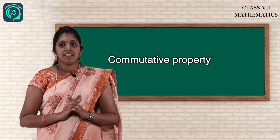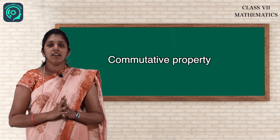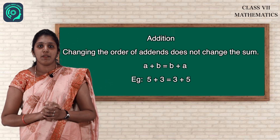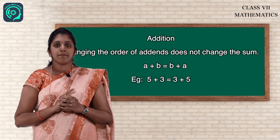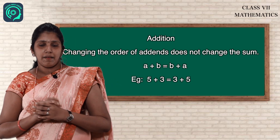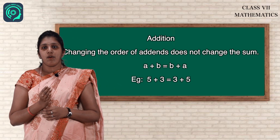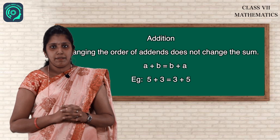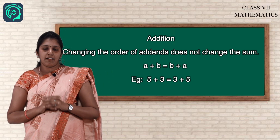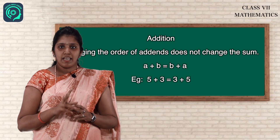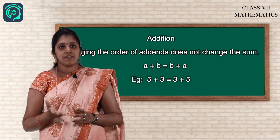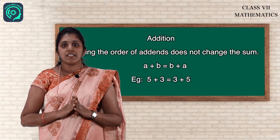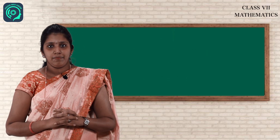The next property is commutative property. Changing the order of addends does not change the sum. For two integers A and B, the property states A plus B equals B plus A. For example, 5 plus 3 equals 8. If you change the order, 3 plus 5 is also equal to 8. So we can say commutative property holds for addition.